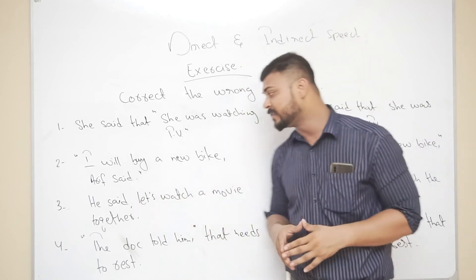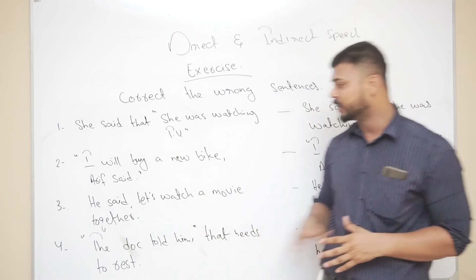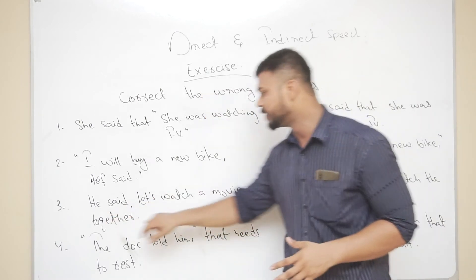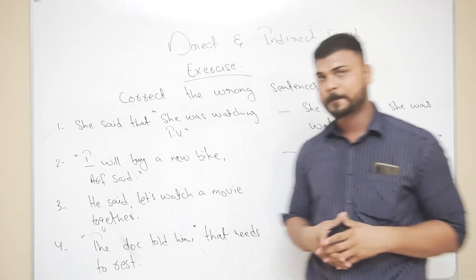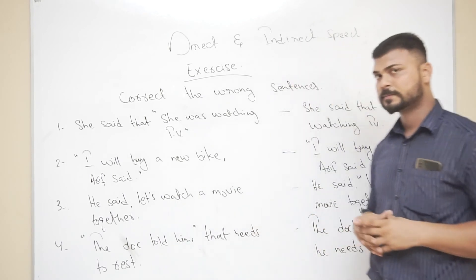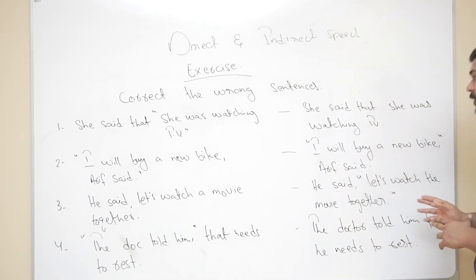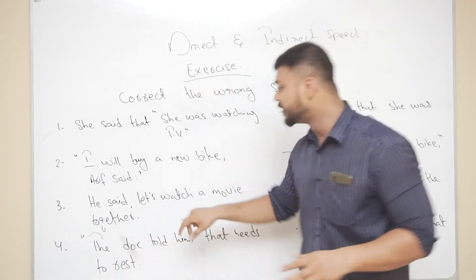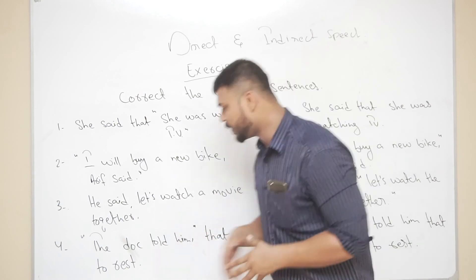The next sentence is: He said, let's watch a movie together. He said comma let's watch the movie together with a full stop. Where is the mistake here? The answer: He said, 'Let's watch the movie together.' The inverted commas should cover this sentence because it is a direct speech.